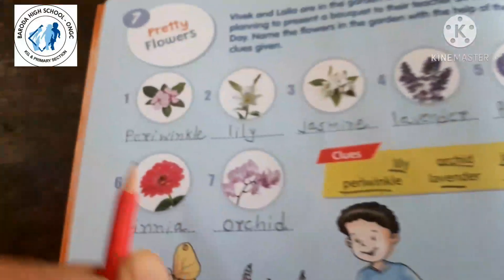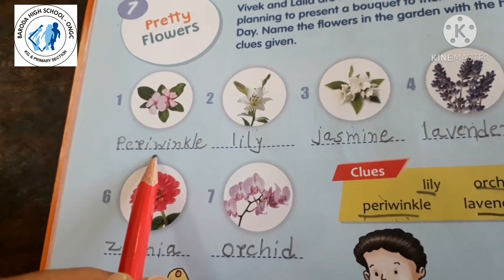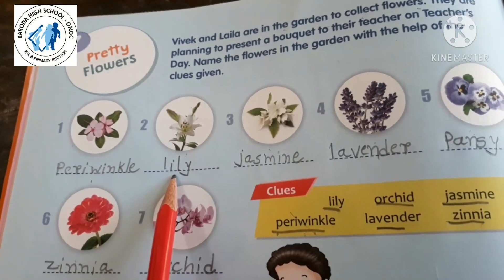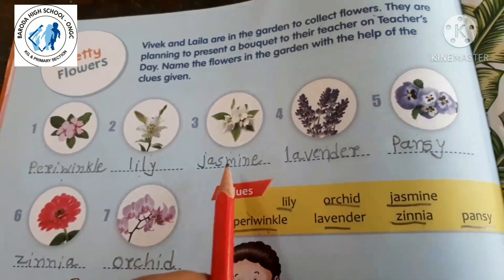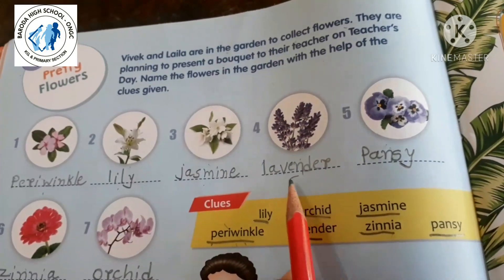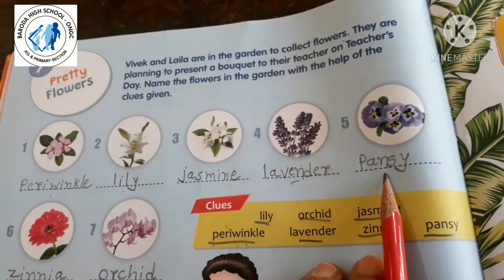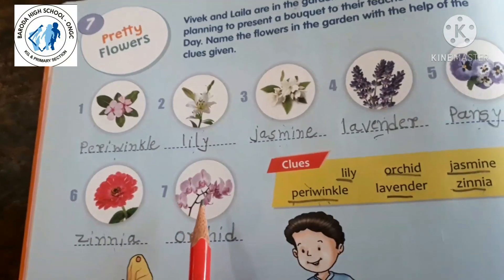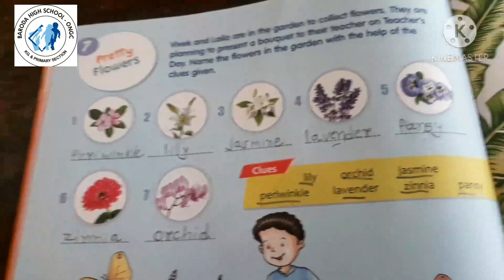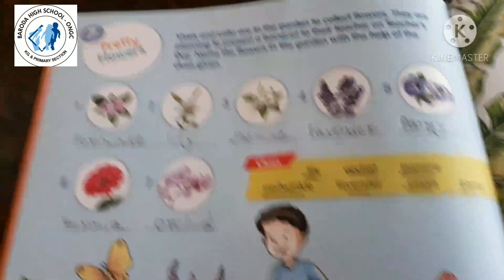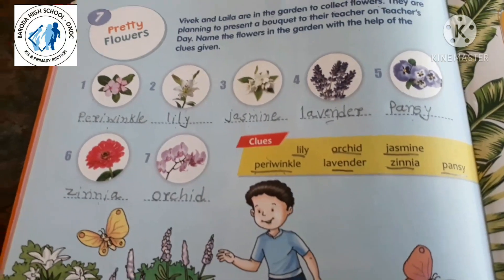Now repeat after me: Periwinkle. Lily. Jasmine. Lavender. Pansy. Zinnia. And orchid. I hope now you all know these flower names.